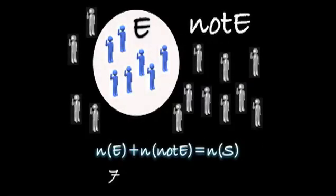Take a look at this Venn diagram. If we count the people in blue that are in region E, we'll see that there are 7 people. If we count the people that are not in region E, that are outside the region, there are 13 people, and they're all in silver.